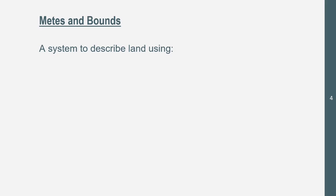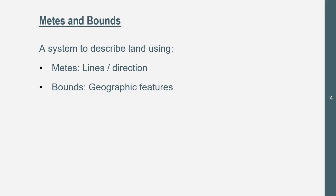Let's get started with metes and bounds, which is basically a system to describe land using metes — which are lines and directions, most of the time a straight line — and bounds, which are geographic features. These don't necessarily have to be a tree or river; this could be like a barn in a rural area. So it could be: go straight past the red barn, or at the triangle house take a left, or at a big hill take a right. You're using a direction. The key thing about metes and bounds is that they always bound to a geographic feature in that rural area.